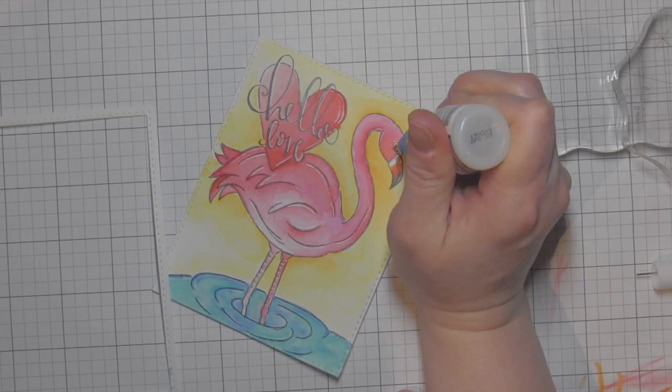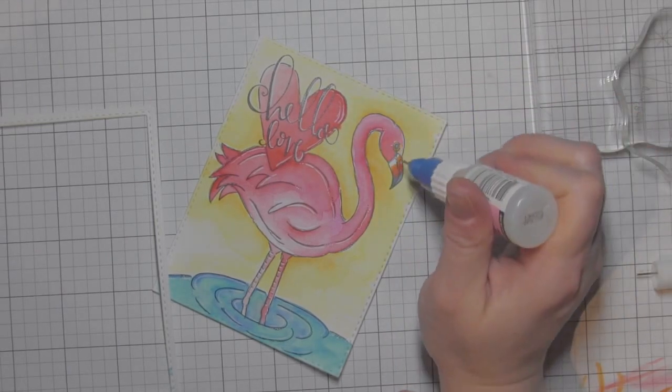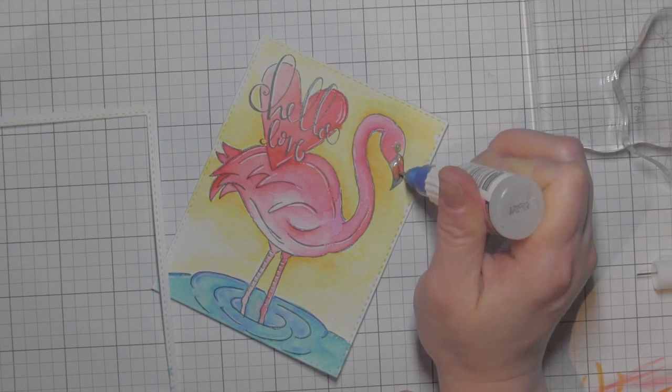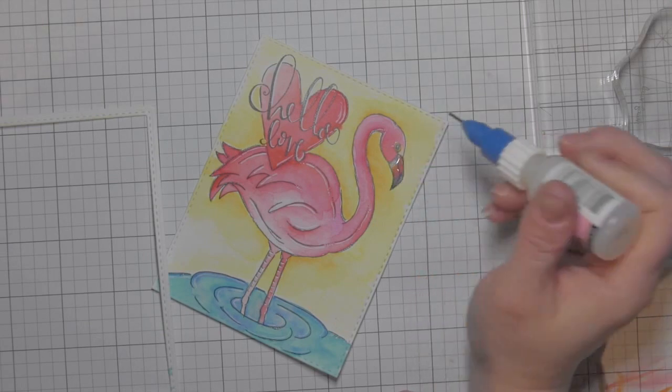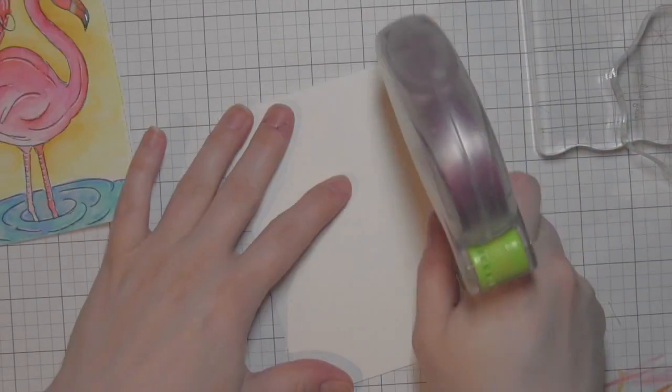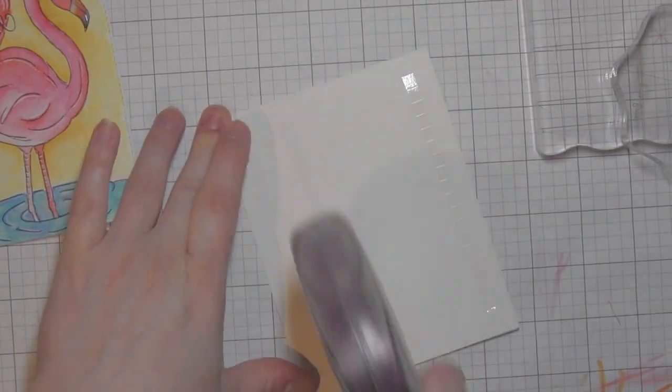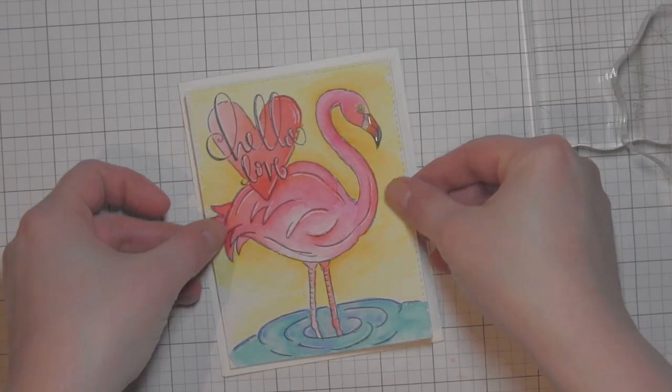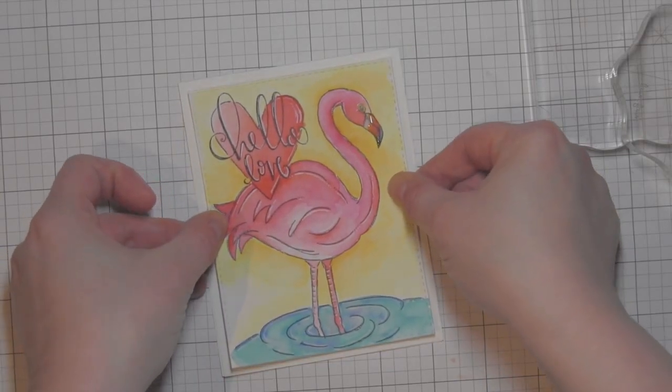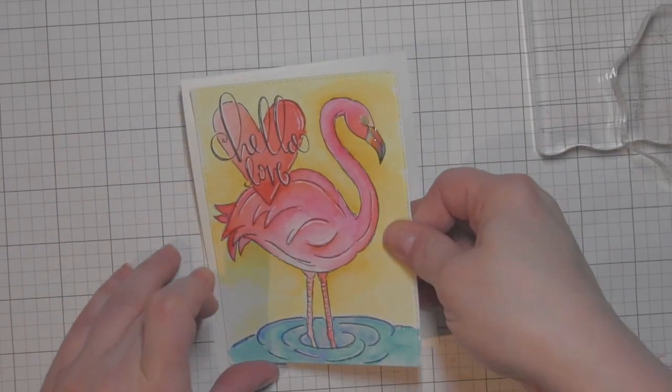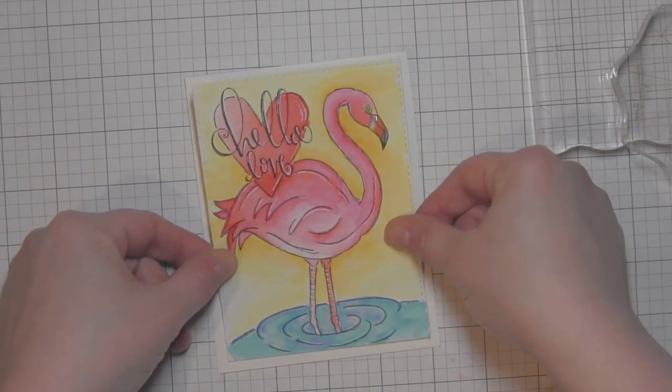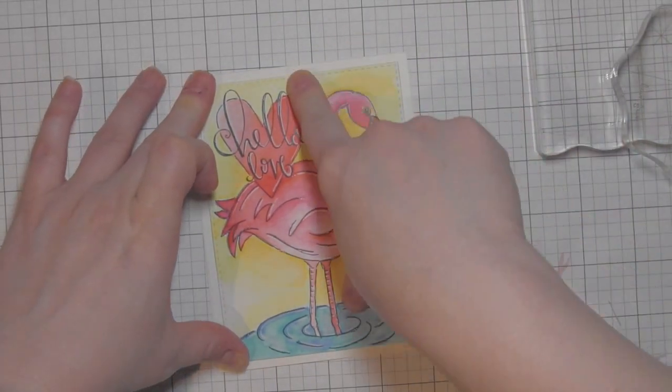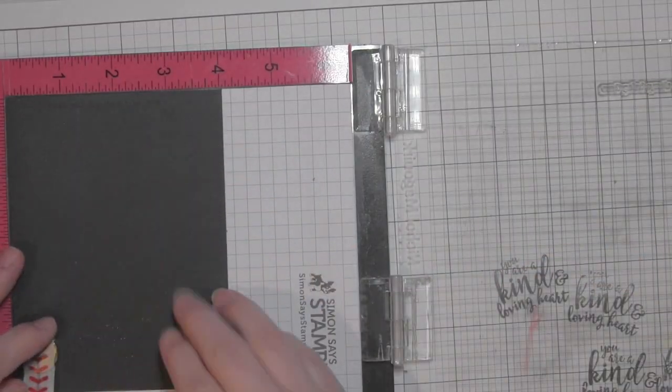Now I want to add a few more details, so I'm going to add a little glossy accents to the eye and to the beak to start with. I'll add a little bit more glossy accents here in a bit to dress up a little more. I'm going to go ahead and attach this to my card base. I've put some nice strong adhesive there. Center the die cut panel and attach that right to my card. You could also use some foam adhesive to give it a little dimension if you want to.